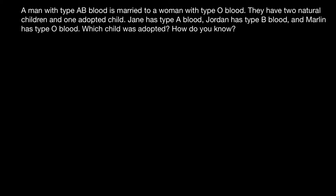Hello, and welcome to Nikolai's Genetics Lessons. Today's question I got from one of my subscribers. A man with type AB blood is married to a woman with type O blood. They have two natural children and one adopted child. Jane has type A blood, Jordan has type B blood, and Marlin has type O blood. Which child is adopted? How do you know? So how are we going to solve this problem?